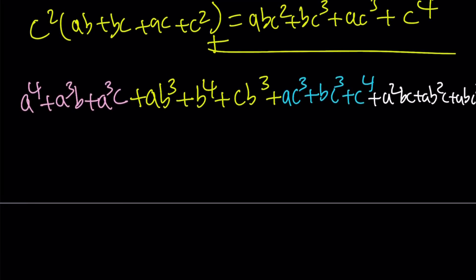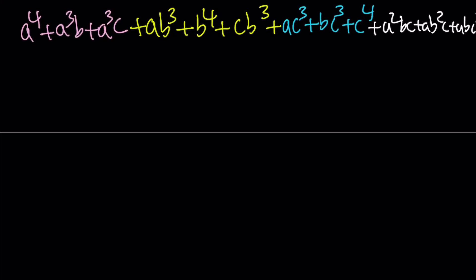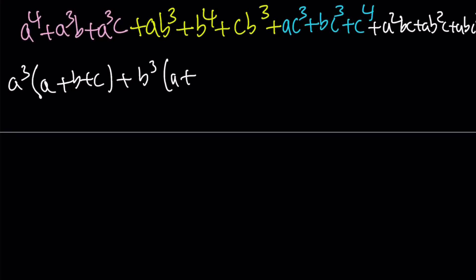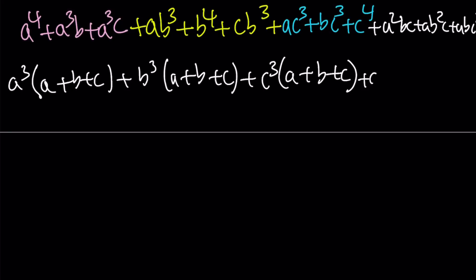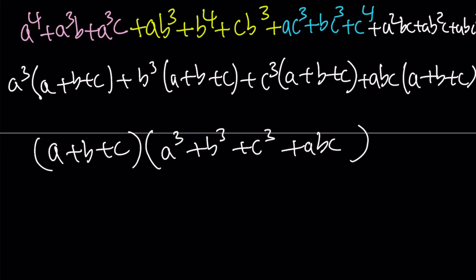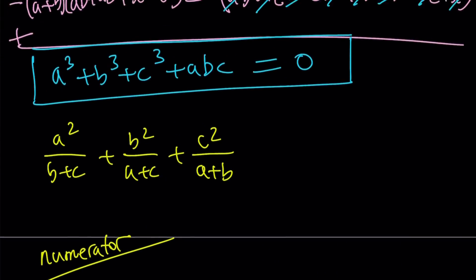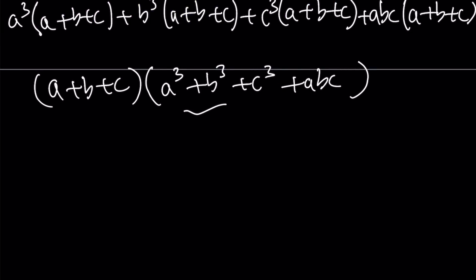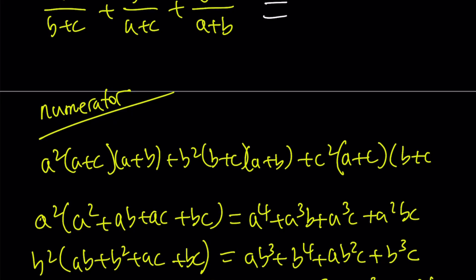We can factor each group: a³ gives (a+b+c), b³ gives (a+b+c), c³ gives (a+b+c), and the last one is abc times (a+b+c). This means we have (a+b+c) times (a³ + b³ + c³ + abc). And we know that a³ + b³ + c³ + abc = 0 from before. So our product is also equal to zero, which means our expression equals zero.